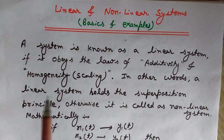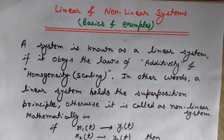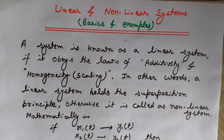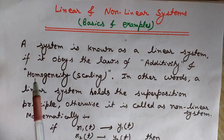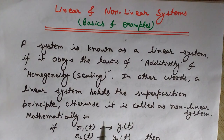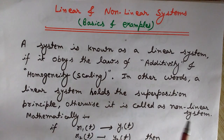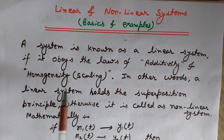First of all, let's see the definition of a linear system. A system is known as a linear system if it obeys the laws of additivity and homogeneity. Homogeneity is also known as scaling. For a linear system, it is required to follow both of these laws. We can say that a linear system must hold the superposition principle. Otherwise, we will call it a nonlinear system if it is not following these laws.